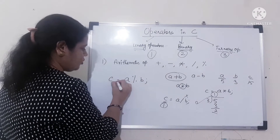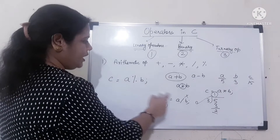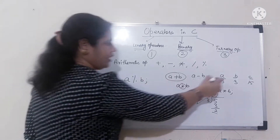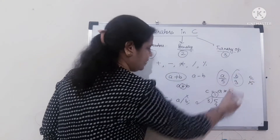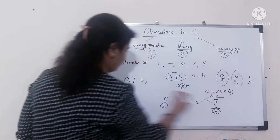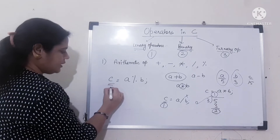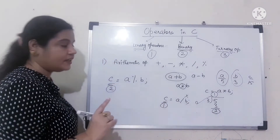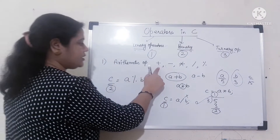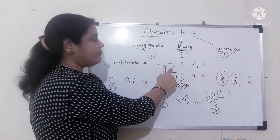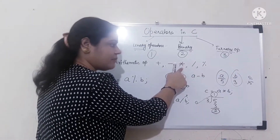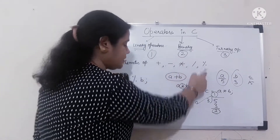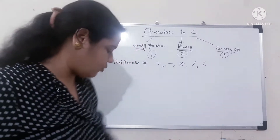C equal to A mod B. If A is 5 and B is 3, it will give you 2 as the answer, because 5 divided by 3 gives remainder 2. So plus is for addition, minus is for subtraction, multiply is for multiplication, divide is for division, and modulus gives the remainder.